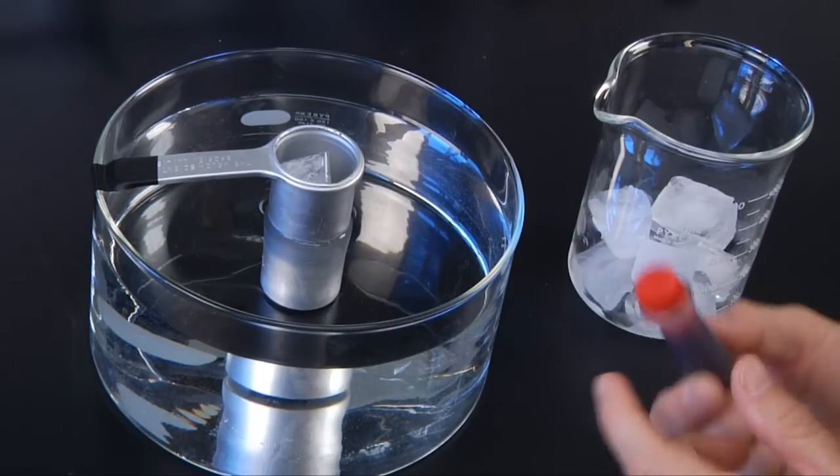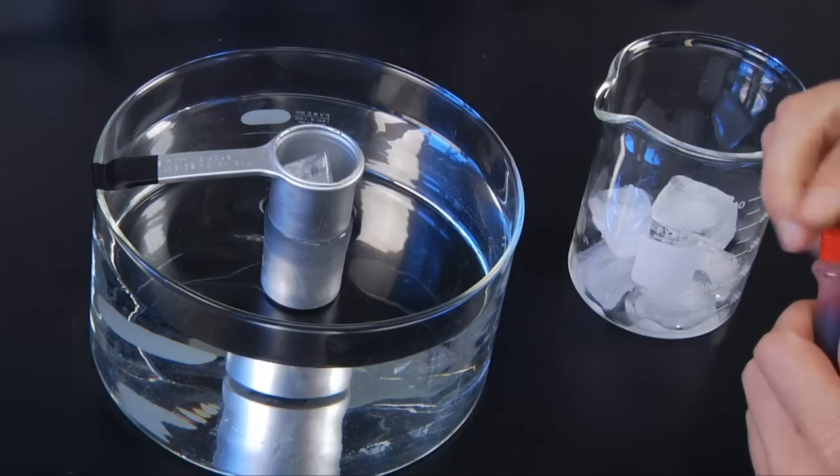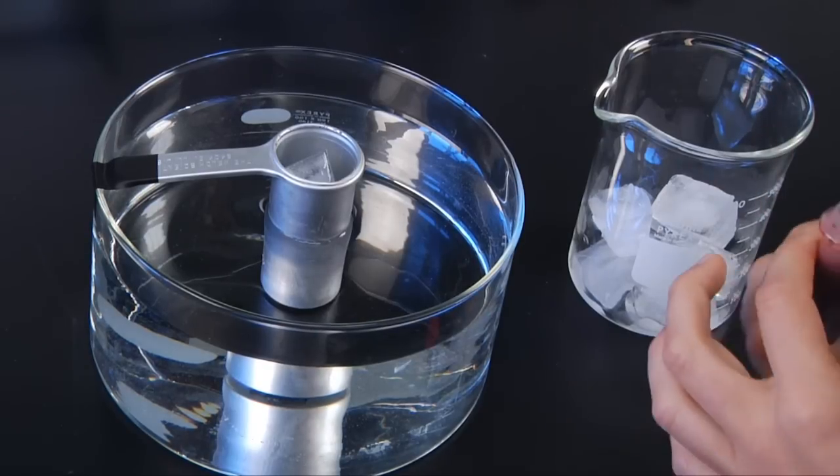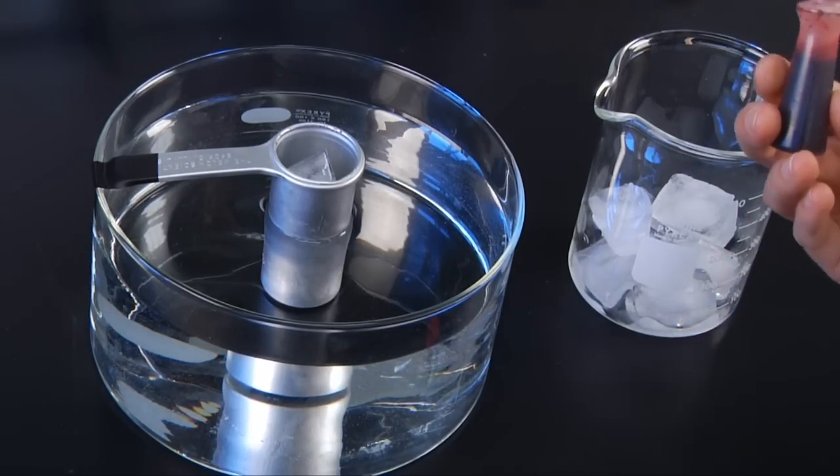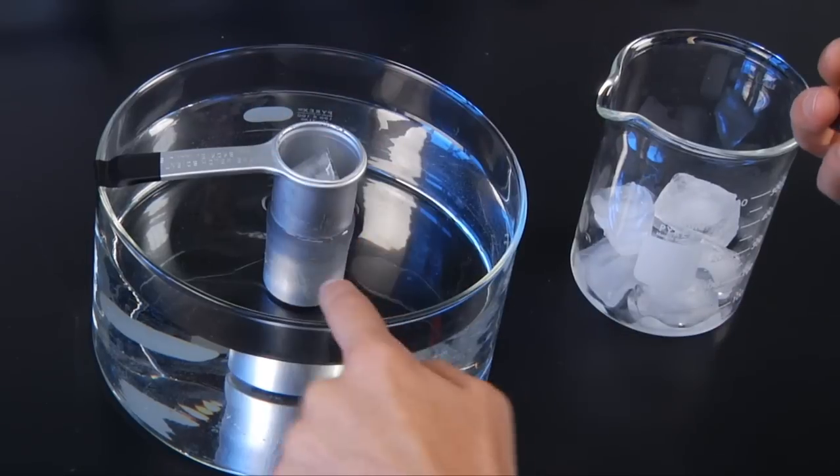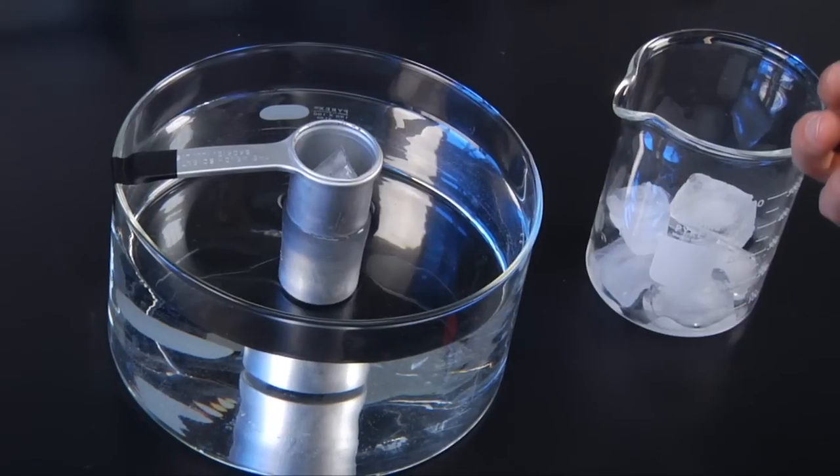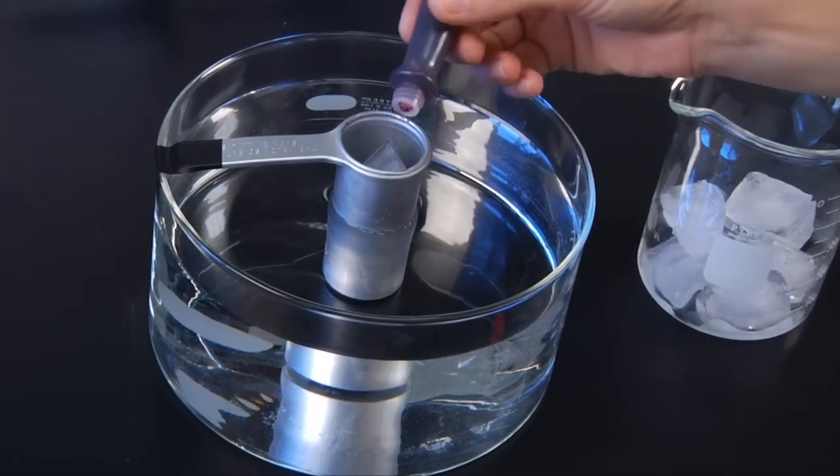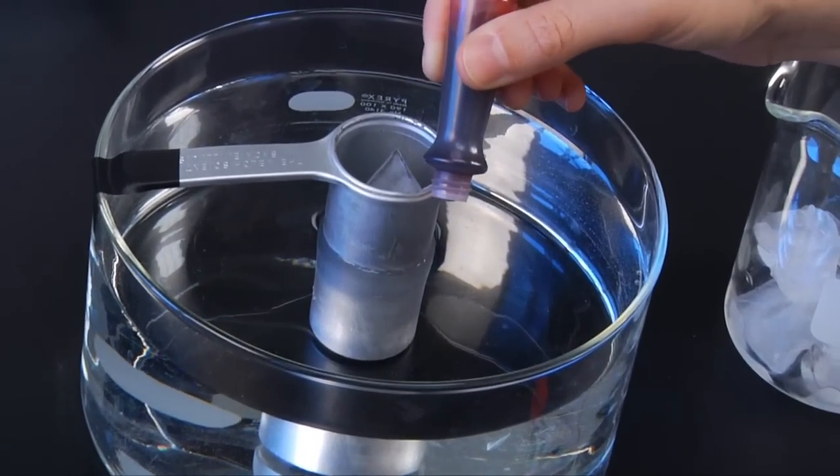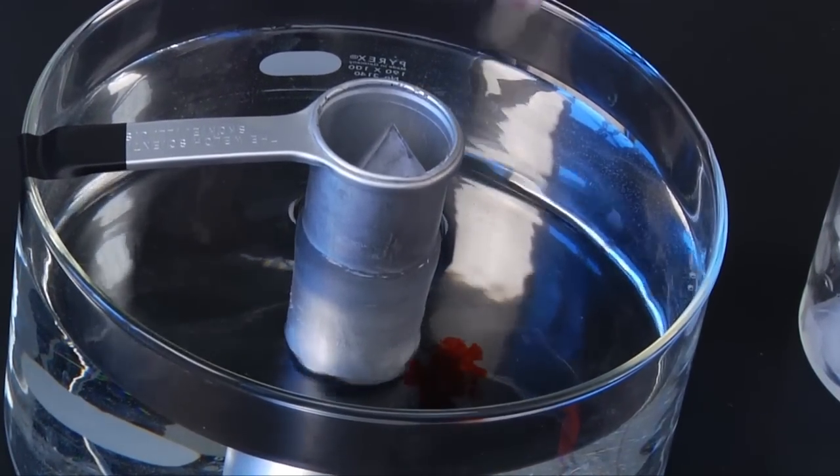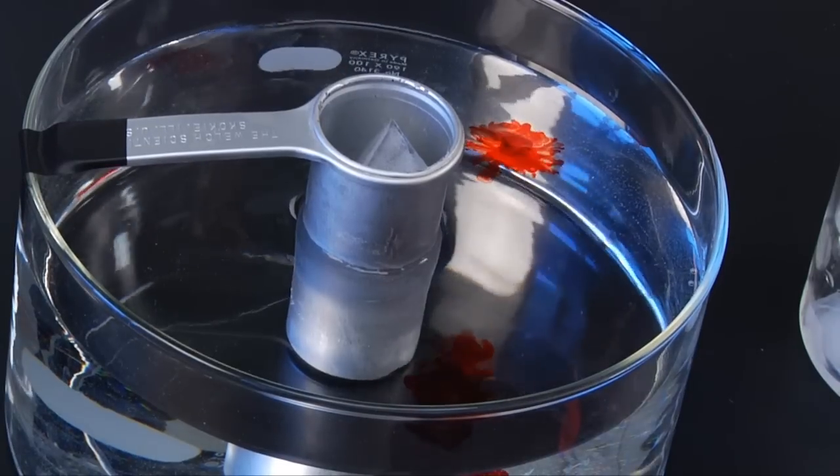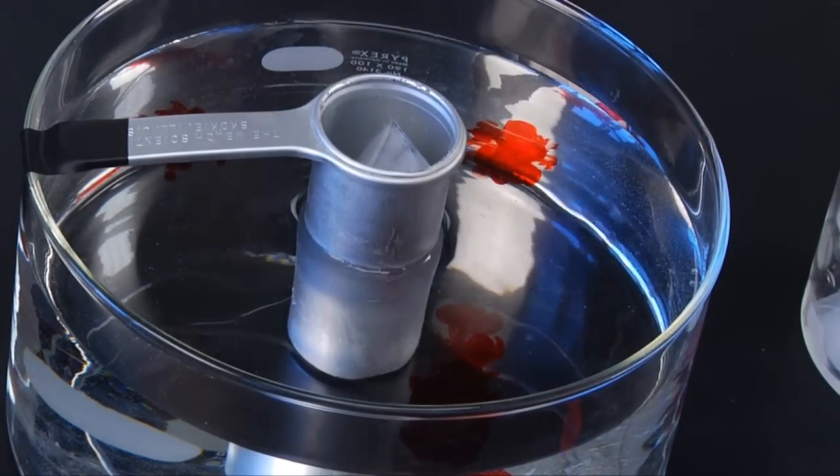What you'll do is you'll take this food dye, you can use whatever color you want, and you're going to add a few drops around your tank on the surface, kind of right in between the edge of your tank and that metal cup. You'll add your drops, put like about three in there, and then you're going to let it sit.